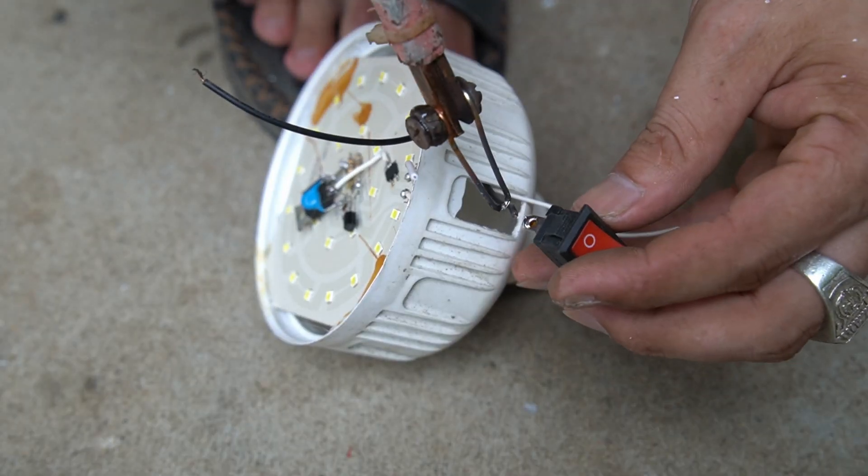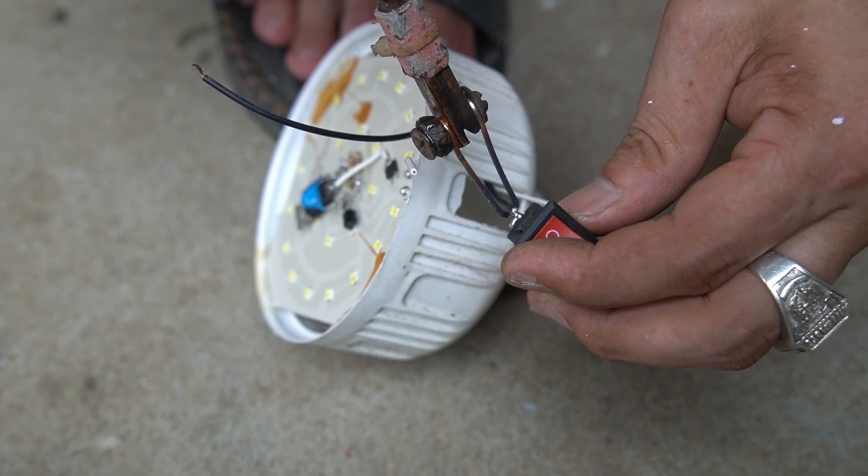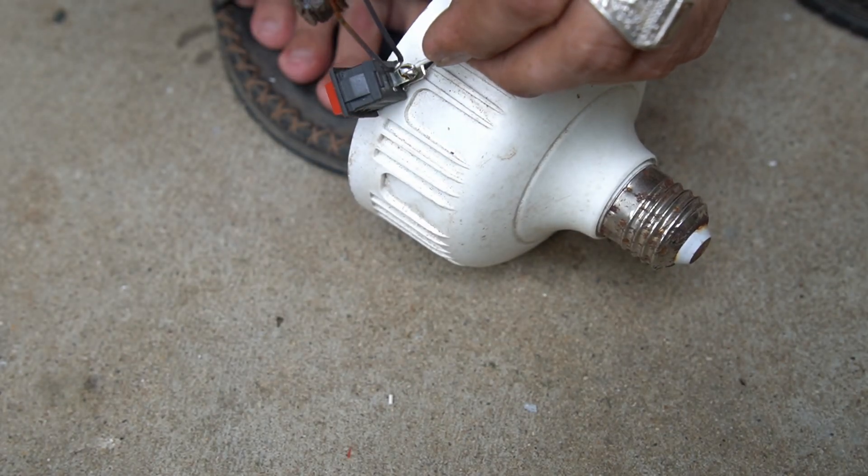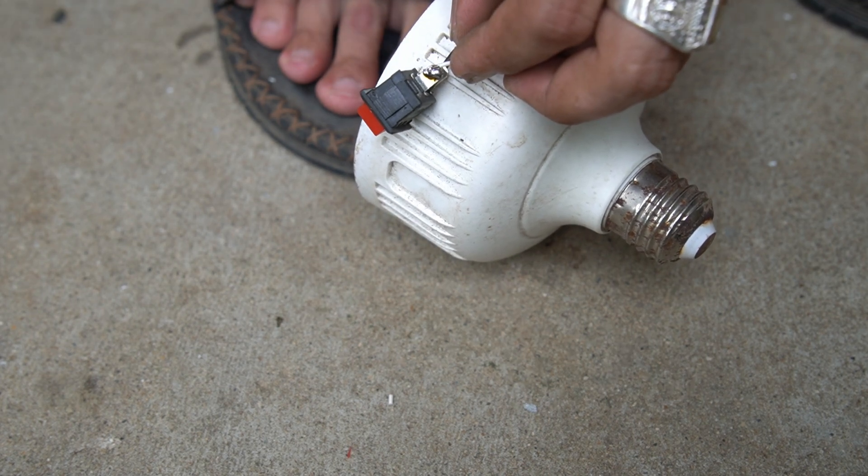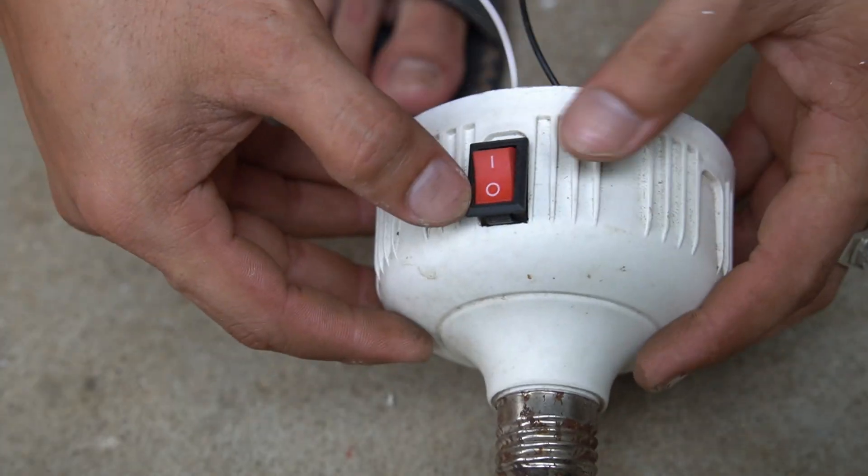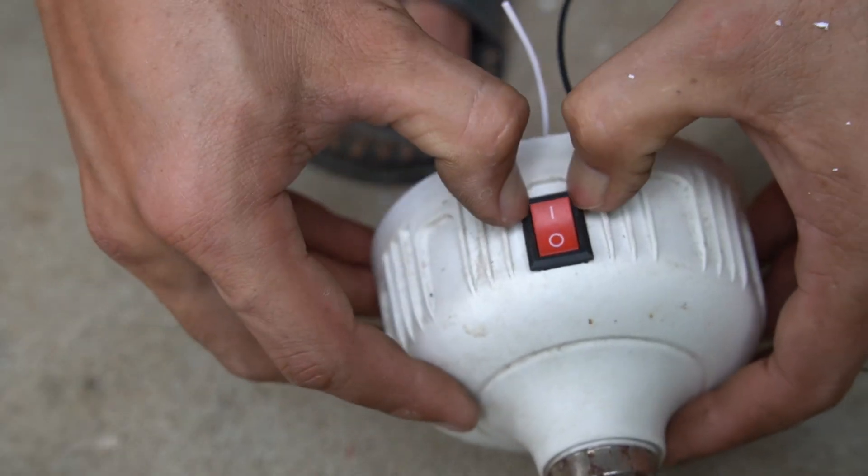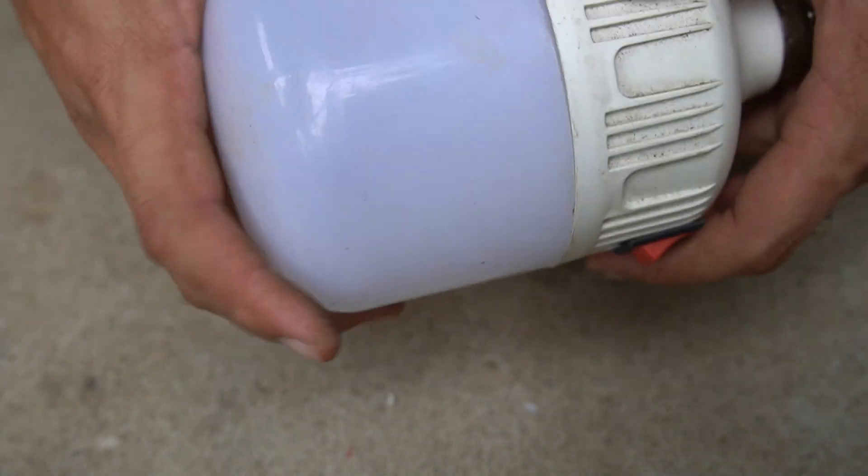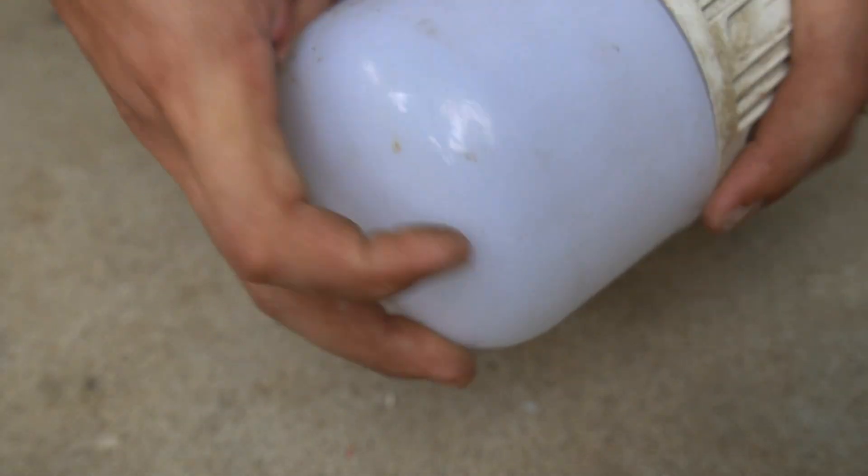And this is the switch I will use to turn the light on and off. After soldering the wire to the switch, I will install it in the created location. Next I put the bulb cap back on.